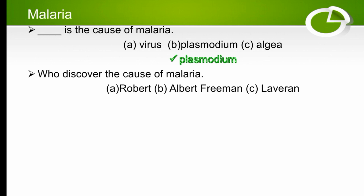Who discovered the cause of malaria? The options are Robert, Albert Freeman, or Laveran. The cause of malaria was first discovered by Laveran.